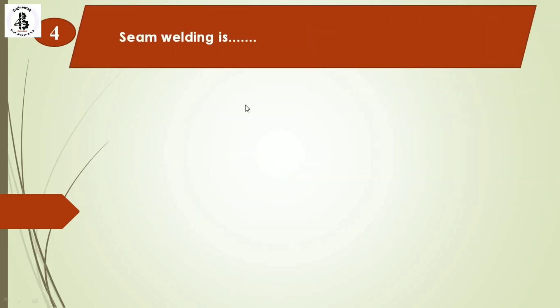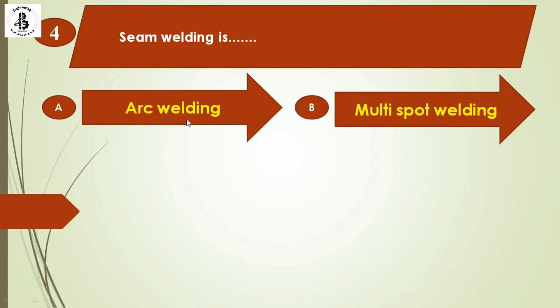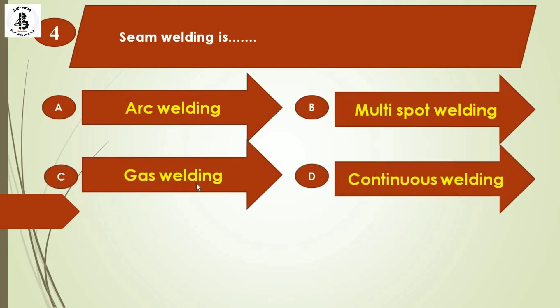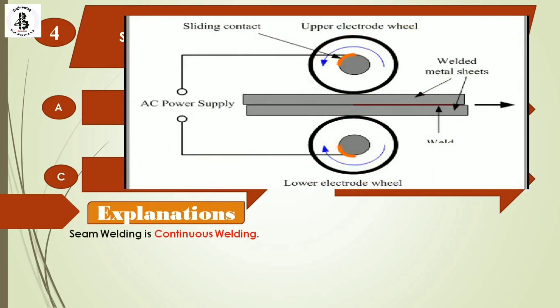Question 4: Seam welding is — option A: arc welding, option B: multi-spot welding, option C: gas welding, option D: continuous welding. Seam welding is considered a continuous welding process. In this process, two electrode wheels are used — the lower wheel is fixed and the upper wheel is movable.